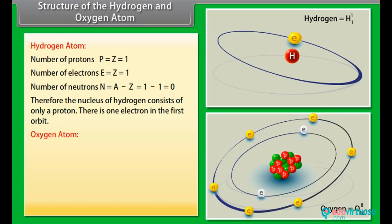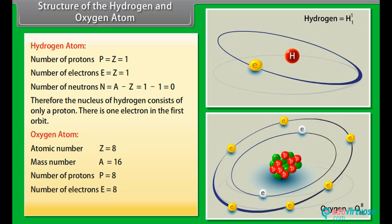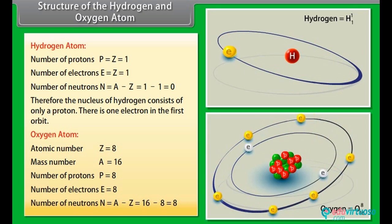Oxygen Atom: Atomic number Z is equal to 8. Mass number A is equal to 16. Number of protons P is equal to 8. Number of electrons E is equal to 8. Number of neutrons N is equal to A minus Z which equals 16 minus 8 which is equal to 8.